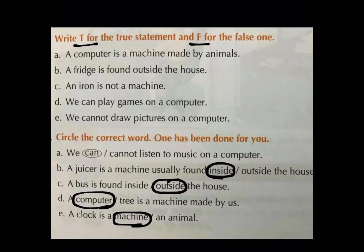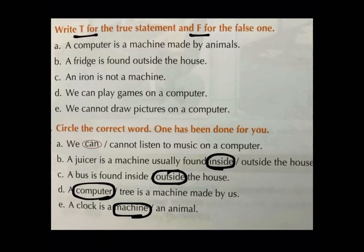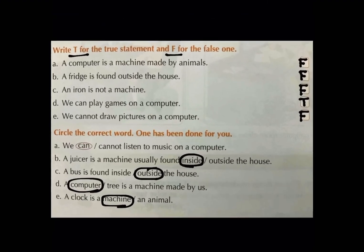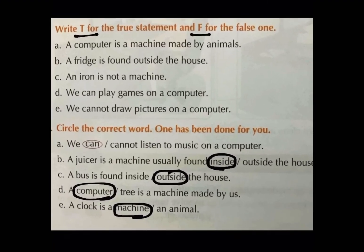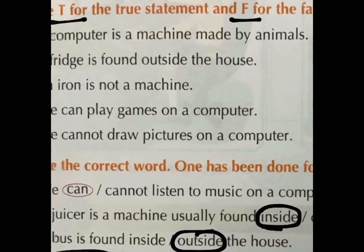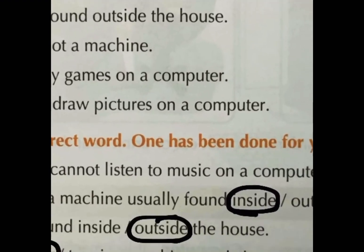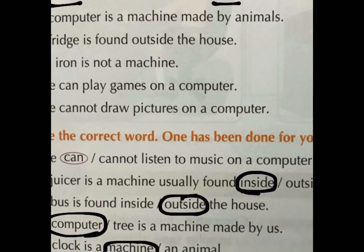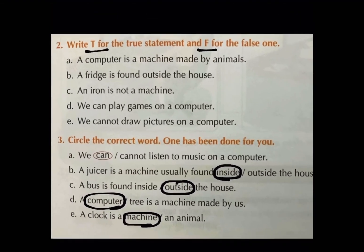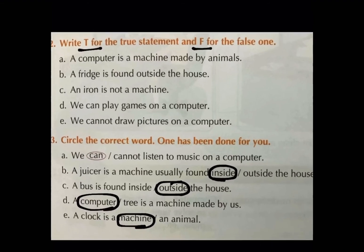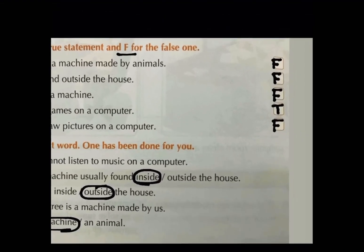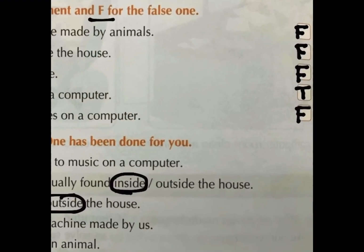Next: We can play games on a computer. Yes, we can play games on computer. So, this statement is true. What is written on E? We cannot draw pictures on a computer. Kya hum computer ke oopar pictures ya drawing draw nai kar saktay? Kar saktay hai na? So, last statement kia hua? It is F for false.